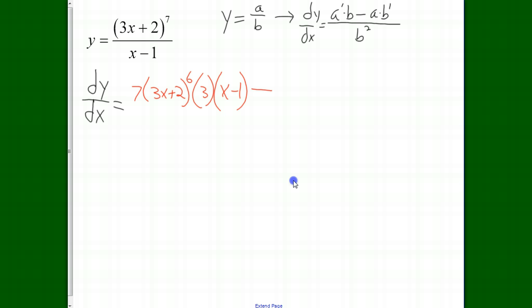Minus the numerator, which is 3x plus 2 to the 7th power, multiplied by the derivative of the denominator, which is just 1, all over the denominator squared. That's our quotient rule with a chain rule thrown in.